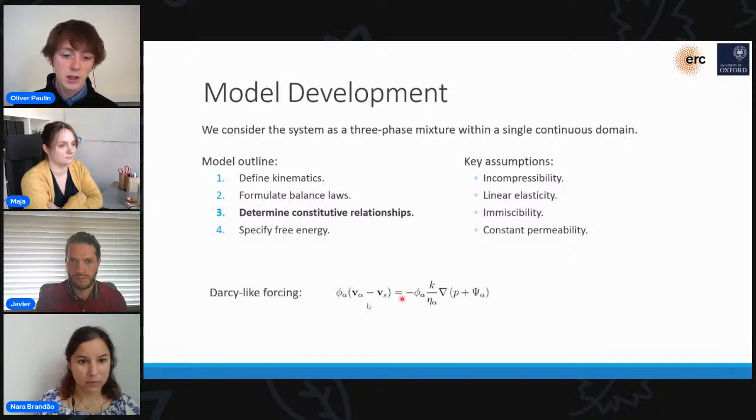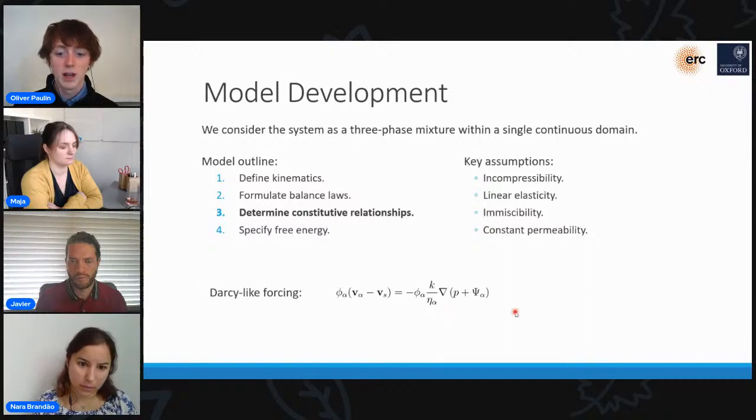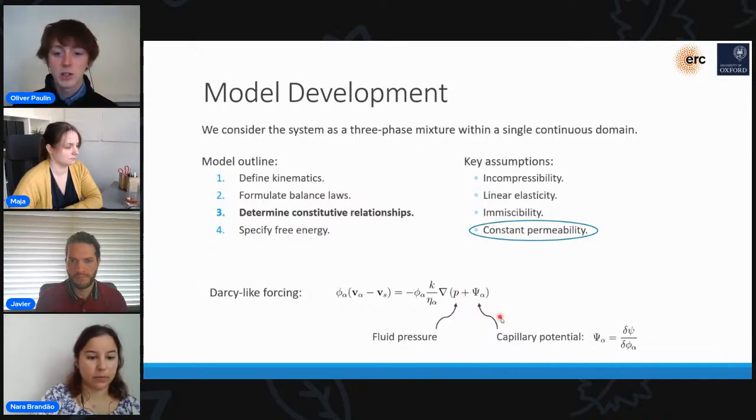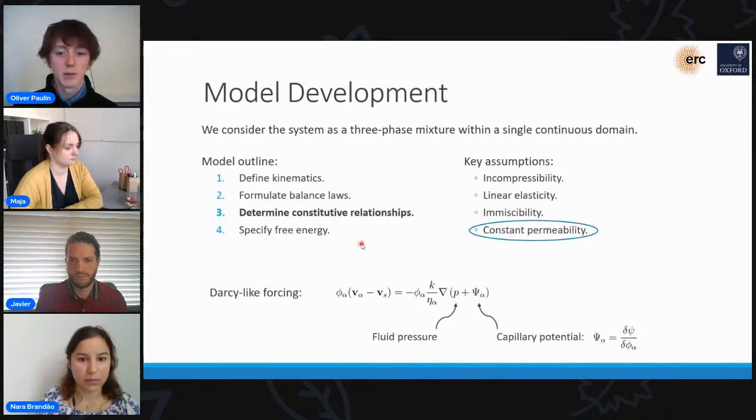For our constitutive relationships, we're going to assume Darcy-like forcing. So the relative liquid flux on the left here is just proportional to gradients in the pressure. There are two contributions to the pressure here, one from the fluid pressure, P, that I mentioned in the previous slide, and one due to the capillary potential, which we can find by taking variations of the energy that I'll talk about in a moment. A final assumption we make of our model here is that the packing is isotropic and has constant permeability. That just means that we have a simple linear pre-factor in front of our gradient term here.